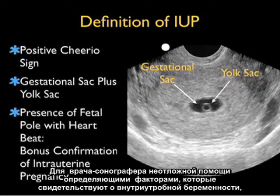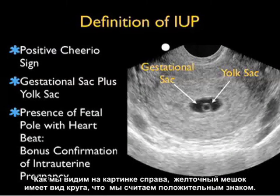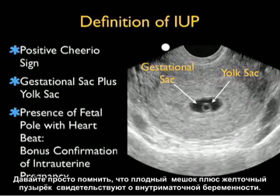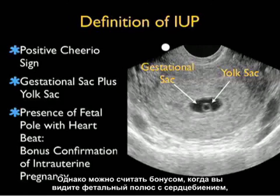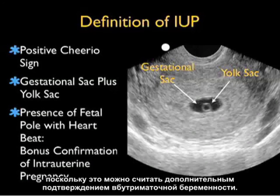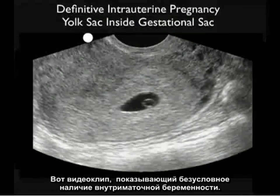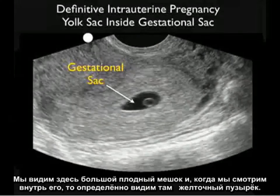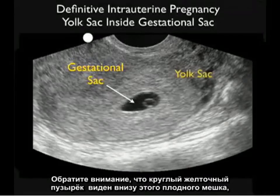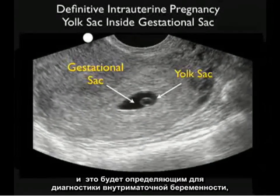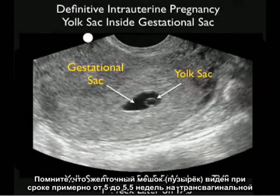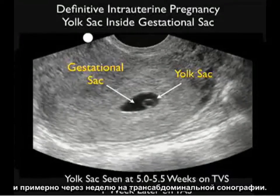The findings we define as indicative of an intrauterine pregnancy for an emergency physician sonographer are the presence of a gestational sac with a yolk sac inside. The yolk sac has a circular appearance we call the positive cheerio sign. Gestational sac plus yolk sac is indicative of intrauterine pregnancy, though bonus points are given if you see a fetal pole with a heartbeat. This video clip shows a definitive intrauterine pregnancy with a larger gestational sac and the positive yolk sac or cheerio sign visible towards the inferior aspect, effectively ruling out ectopic pregnancy in the vast majority of patients. The yolk sac is seen at about 5 to 5.5 weeks on transvaginal sonography and about a week later on transabdominal sonography.